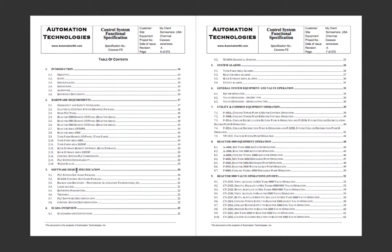What is important is the design specifications, because what you get into there is some of the standards of how the system is going to be. For example, some people use green to mean 'run' for a motor and red to mean 'stop.' But in some industries they'll say, 'no, red means running because that's a dangerous situation, and green means it's safe.' So this section explains to everyone how things are going to work and how they fit together.